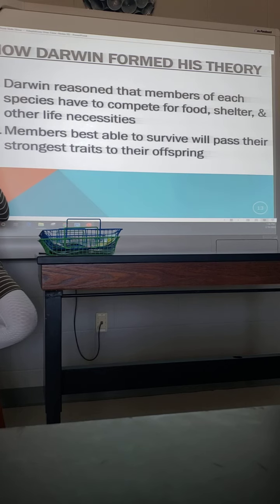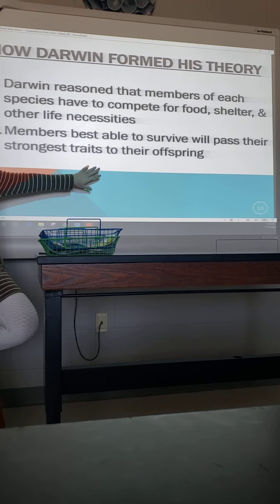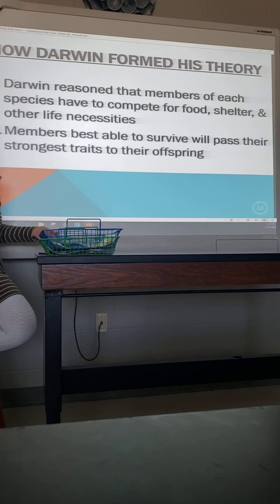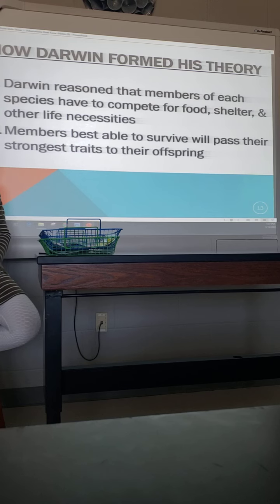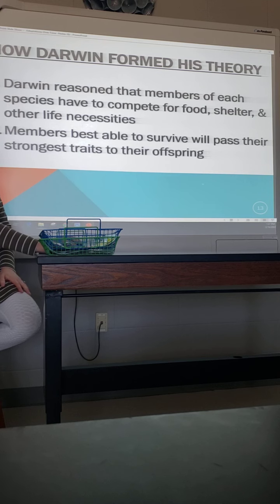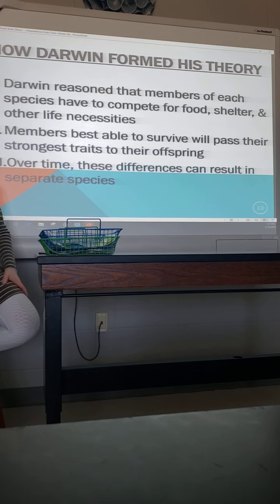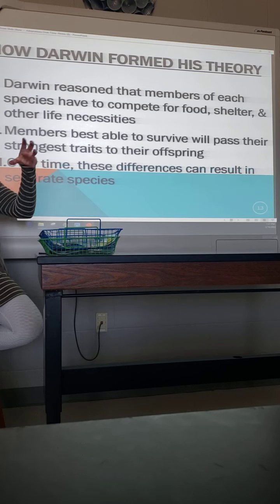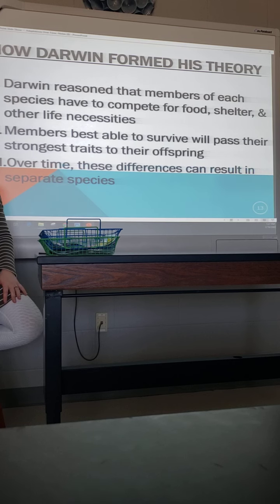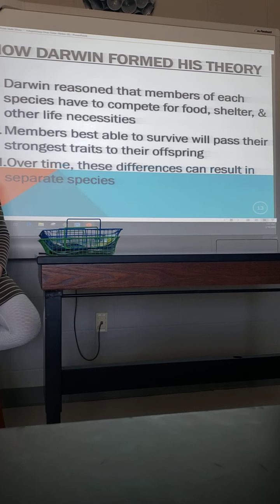The members best able to survive will pass their strongest traits on to their offspring — this is all random. They can't choose what gets passed on, but chances are that trait will get passed on to at least some offspring, and those are the ones that continue to do well. Over time a species could shift to all lions with dark fur. Over time these differences can result in an entirely different species — you might end up with a dark-furred species and a golden-furred one, or the weaker one becomes extinct.